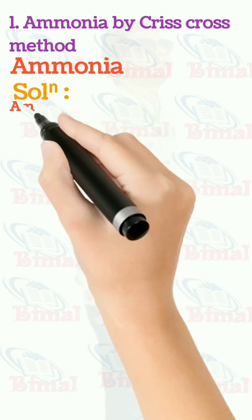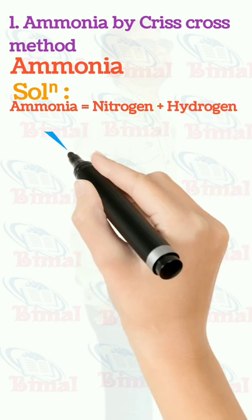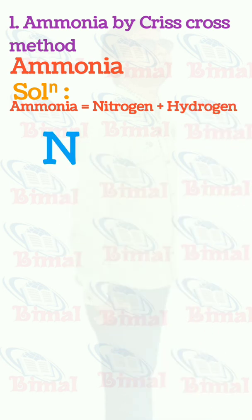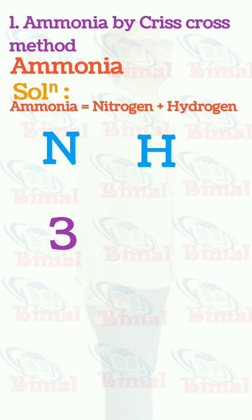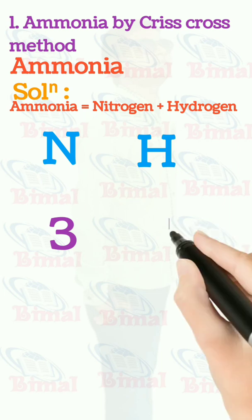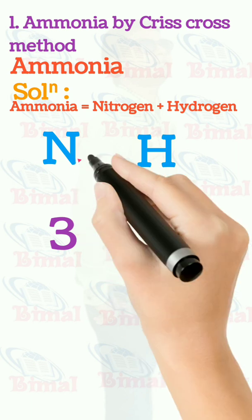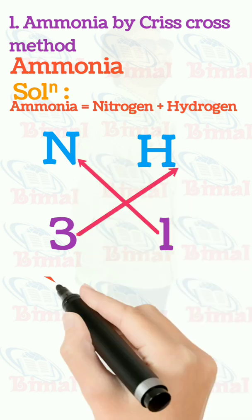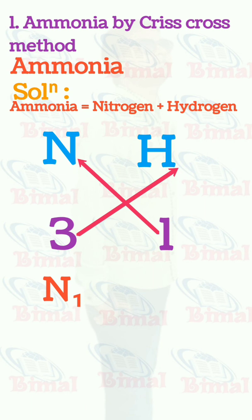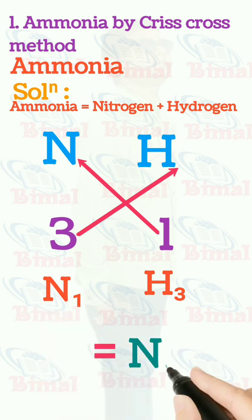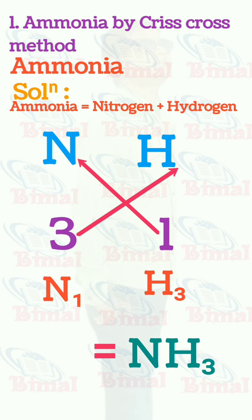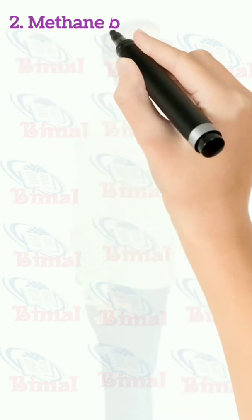Molecular formula of ammonia by criss-cross method. Ammonia is equal to nitrogen plus hydrogen. Symbol for nitrogen is N, symbol for hydrogen is H. Valency of nitrogen is 3, valency of hydrogen is 1. When we do criss-cross, the valencies are exchanged, so we write N1 H3, which gives us NH3. We don't write N1, so we get NH3 as the molecular formula of ammonia.